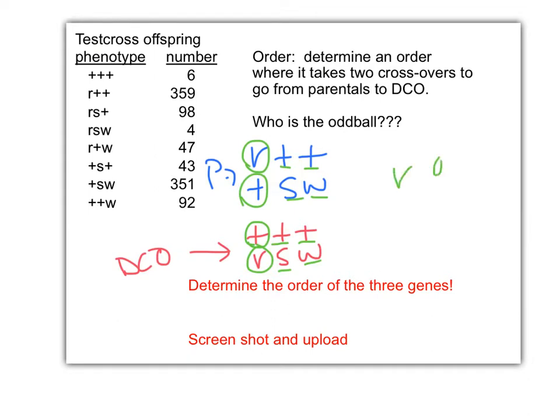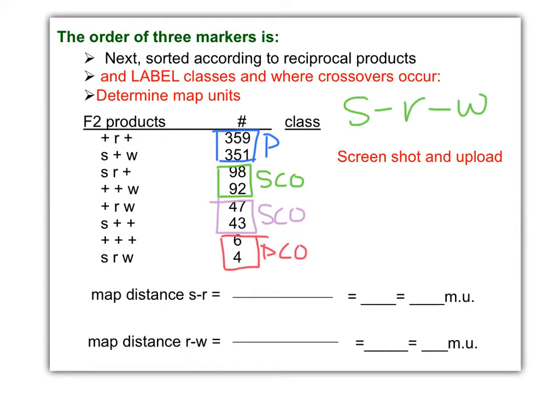If R is the oddball, what does that mean? Yep, it means R is in the middle. Middle gene. And then it doesn't matter if we do S, W, or if we do W, R, S. Either order is fine. It doesn't matter. All is good. Now you know the middle gene is R.